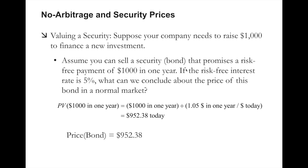They sell something in exchange for some dollars today, and they pay back investors a greater amount in the future. Using numbers on this slide, this bond promises a repayment of $1,000 in one year's time. If the risk-free interest rate is 5%, what should the price of the bond be in a normal market? A normal market means there are no arbitrage opportunities — it just means with a specified price, there is no way to get an arbitrage profit. The calculation shows the price of the bond should be $952.38 today, meaning the company can raise $952.38 now and repay $1,000 in one year.